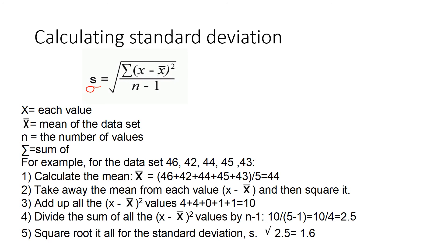Step 3 is adding up all the X minus X-bar squared values: 4 plus 4 plus 0 plus 1 plus 1 equals 10. In step 4, divide the sum by N minus 1. There are 5 pieces of data, so N minus 1 equals 4, giving 10 divided by 4 equals 2.5. In step 5, square root everything for the standard deviation: the square root of 2.5 equals 1.6.